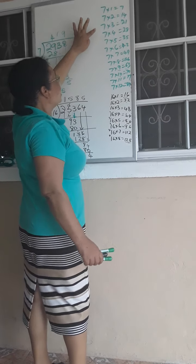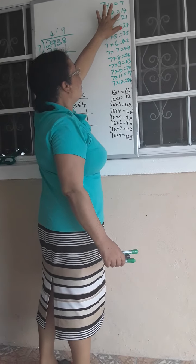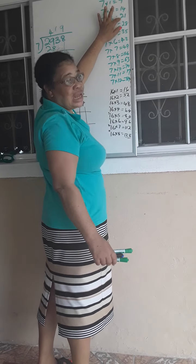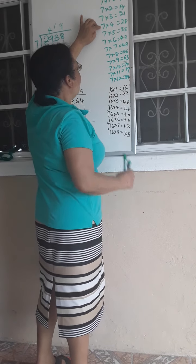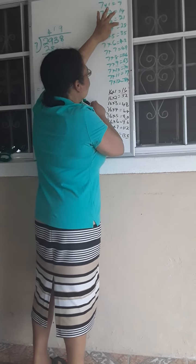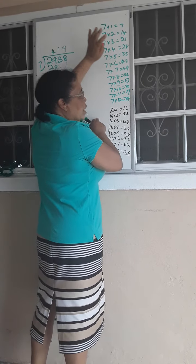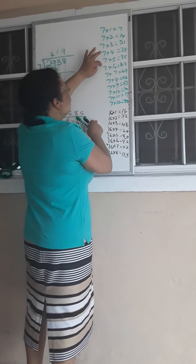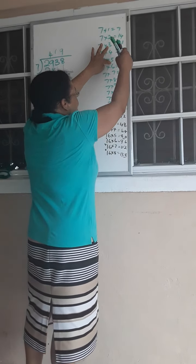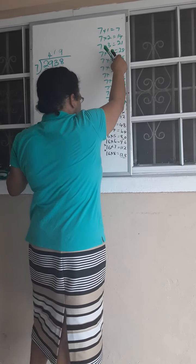So 7 times 2 is 14. 7 times 3, I'm adding another 7 to 14, and I will get 21. 7 times 4, adding another 7 to 21, I will get 28. When I continue, 7 times 5, add another 7 to 28, and I will get 35.